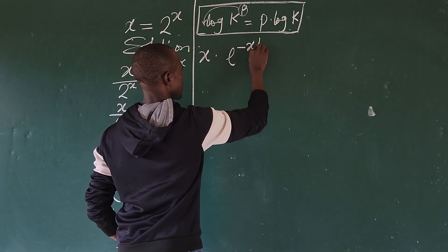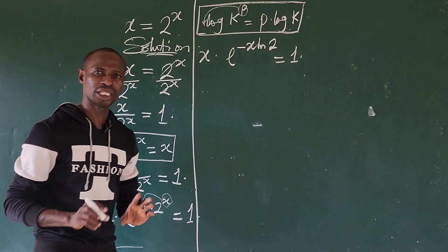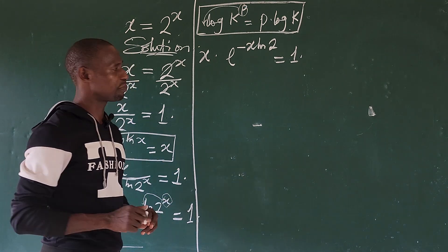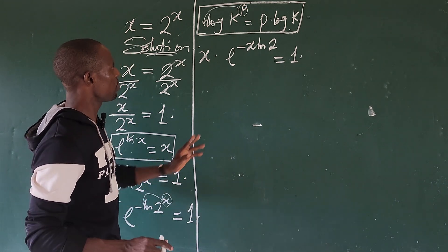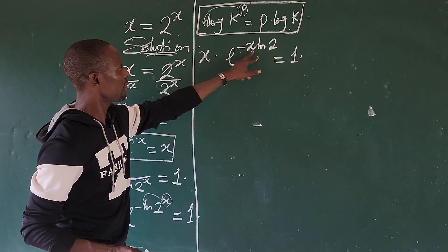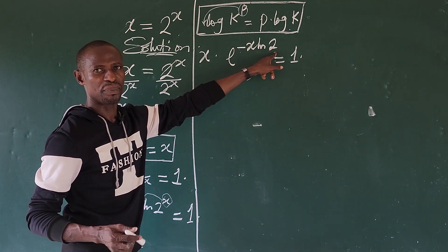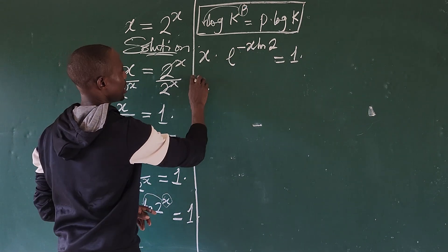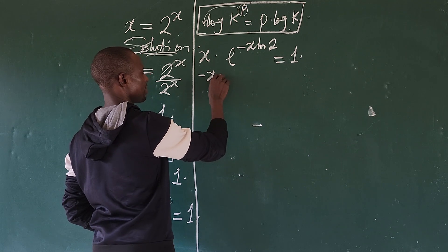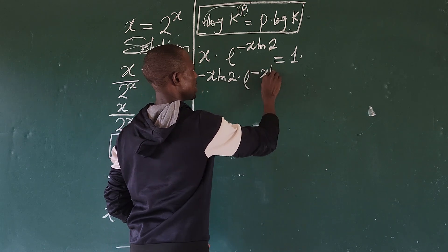We want to evoke the Lambert W function, otherwise known as the product log. But before we can do that, we make sure that what we have at the exponent here is same with what we have at the base. Here we have x, here we have x, so the difference between here and here is the minus ln of 2. We have to multiply both by minus ln of 2.